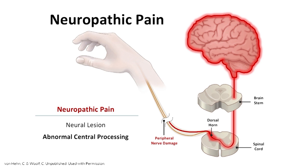Neuropathic pain is pain associated with damage to the nervous system itself. Neural lesions result in pathological changes in the function of the nervous system, making this a true disease state. It is most commonly associated with damage to peripheral nerves, though it can also occur after a stroke or trauma such as spinal cord injury. The key feature here is that the abnormal nervous system becomes the generator of the pain.